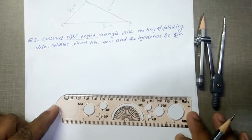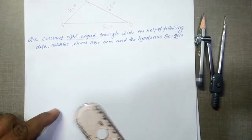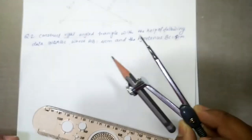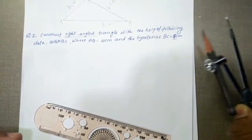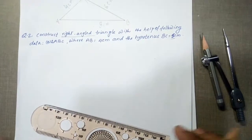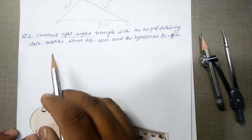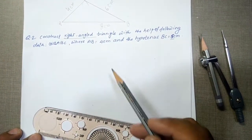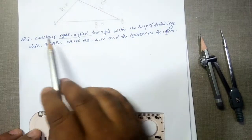To draw this you need a scale, that we call it as ruler, and you need a compass, with a pencil. What we need to do is, we read this problem first, and then we will go on solving this.